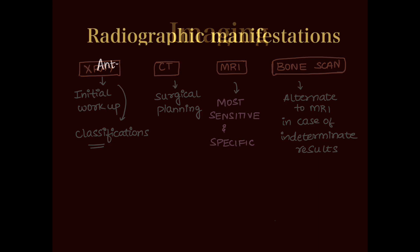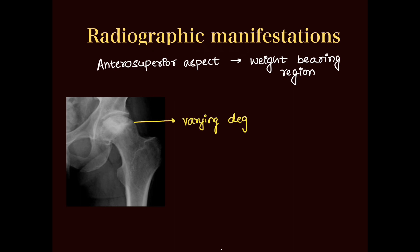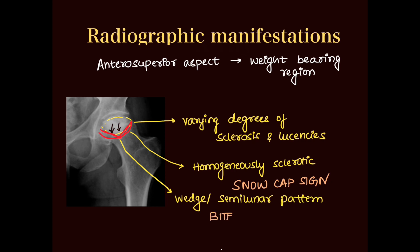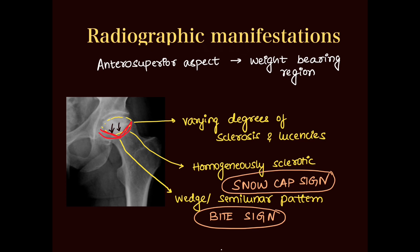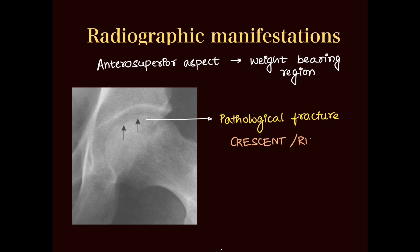For X-ray findings: the anterosuperior aspect of the femoral head is the most common site involved, as it is the weight-bearing region. Initially, there will be varying degrees of sclerosis and lucencies mixed together. If homogeneously sclerotic, it is called the snow cap sign, showing a wedge-shaped or U-shaped appearance, also called the wedge or semilunar pattern or bite sign. There can also be a subchondral fracture appearing as a lucent thin crescent line, called the crescent or rim sign.